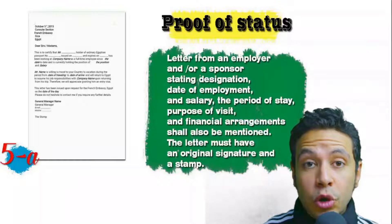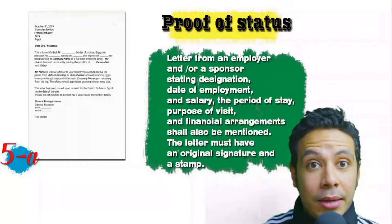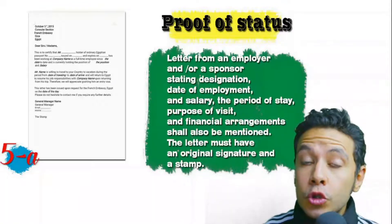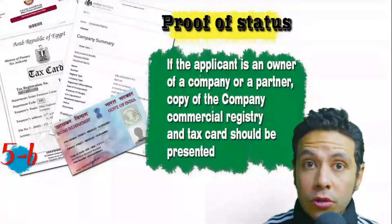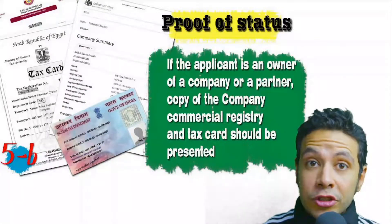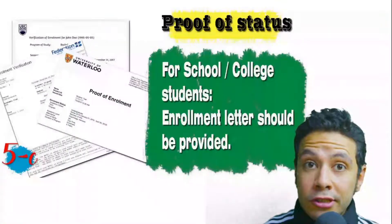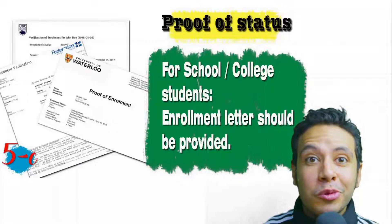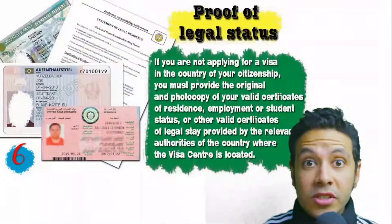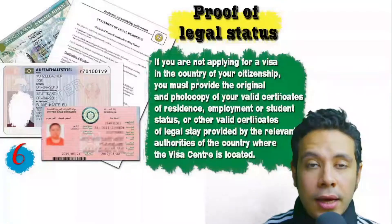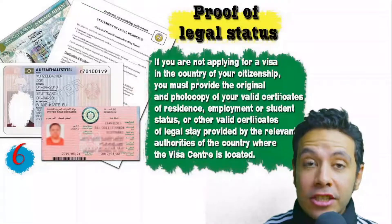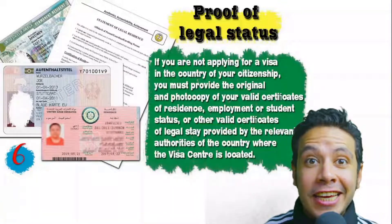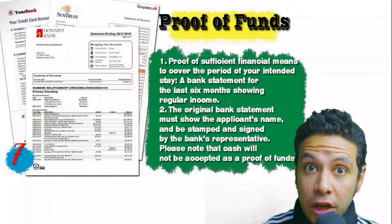You will also need to provide proof of status. If you are an employee, provide a letter from your employer or HR department stating your name, work details, salary, address, and contact numbers — with an original signature and stamp. If you own a business, present your commercial registry and tax card. If you are a student, provide an enrollment letter from your school or university. If you are applying from a country other than your own, provide proof of legal residence there — a certificate of legal residence or a valid residence visa.